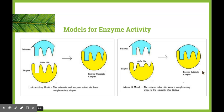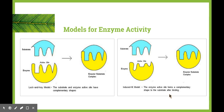The induced fit model proposes that the active site slightly changes its shape to accommodate the substrate perfectly. The shape of the enzyme must match the shape of the substrate. Enzymes are therefore very specific, and they will only function correctly if the substrate matches the active site. The enzyme does not form a chemical bond with the substrate. After the reaction, the products are released and the enzyme returns to its normal shape. Because the enzyme does not form chemical bonds with the substrate, it remains unchanged. As a result, the enzyme molecule can be reused, so only a small amount of enzyme is needed.